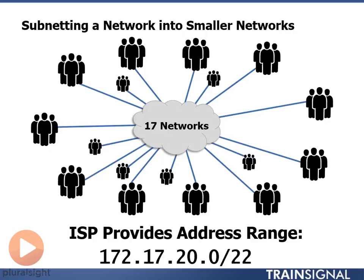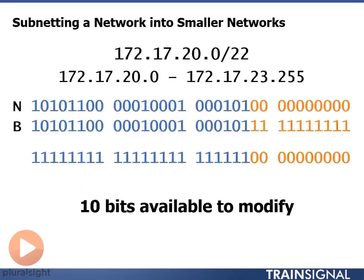We have 172.17.20.0/22 and we need 17 networks. So we set up our problem. First things first, we're going to convert to binary to find out what our range is. Our range here is 172.17.20.0 through 172.17.23.255. We have 10 bits available to modify.